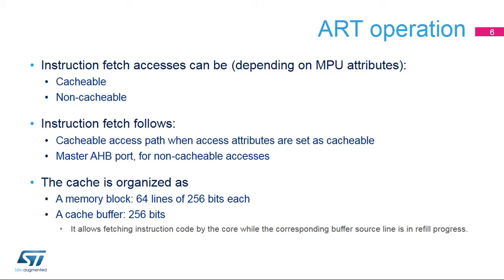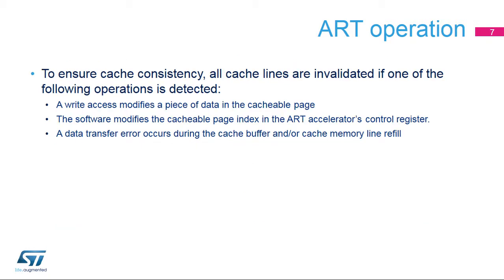The cache buffer allows fetching instruction code by the core while the corresponding buffer source line is in refill progress. The following cases can cause the code in the cache to become inconsistent with the code at the corresponding address of the addressed memory: a write access modifies a piece of data in the cacheable page of the addressed memory; the software modifies the cacheable page index in the ART accelerator's control register; or a data transfer error occurs during the cache buffer and/or cache memory line refill.